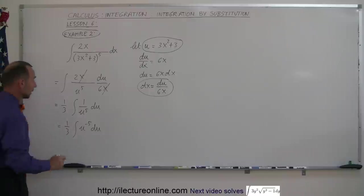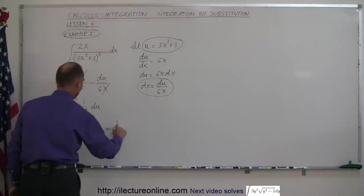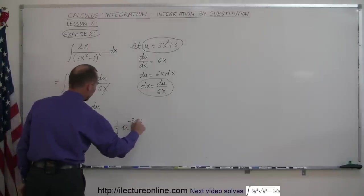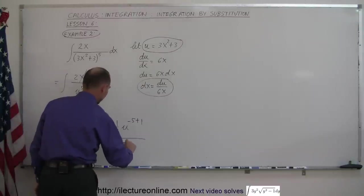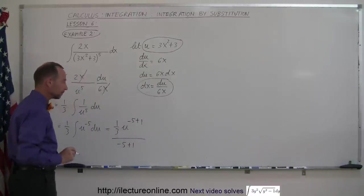So this is equal to 1/3 times u to the minus 5 plus 1. We add 1 to the exponent and divide this whole thing by the new exponent, minus 5 plus 1, and don't forget the constant of integration, plus c.